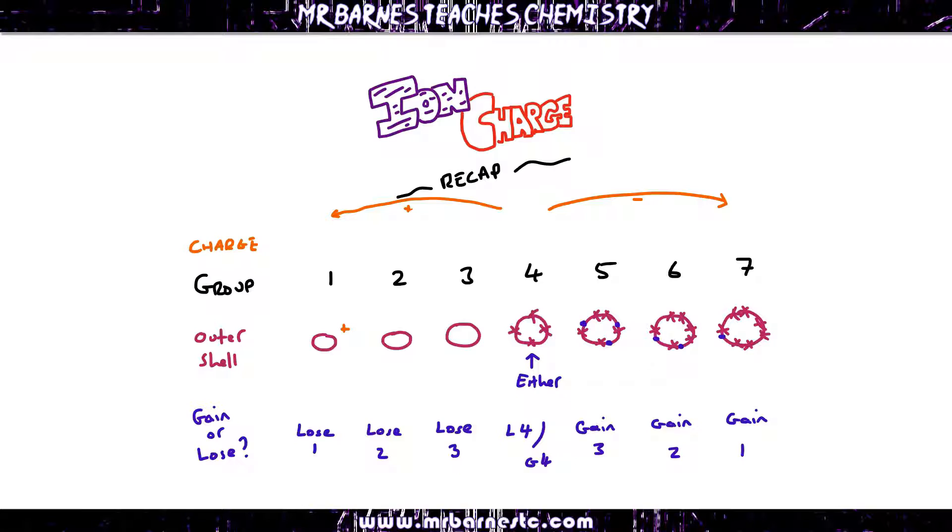So group 1 loses 1, becomes +1. Group 2 loses 2, becomes 2+. Group 3 loses 3, becomes 3+. Group 4, if it loses, becomes 4+, and if it gains electrons it becomes negative. If it gains 4 electrons, it becomes 4-. It gains 3 electrons, 3-. Gains 2 electrons, 2-. Gains 1 electron, 1-.